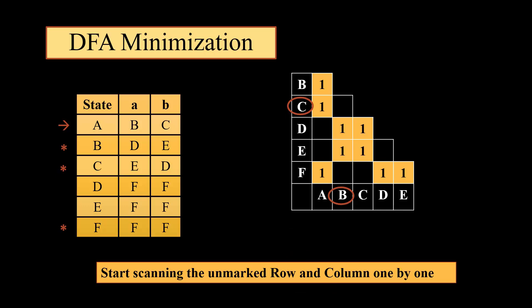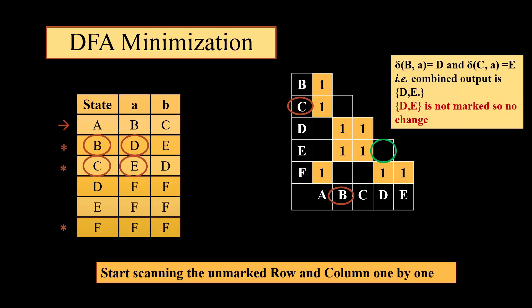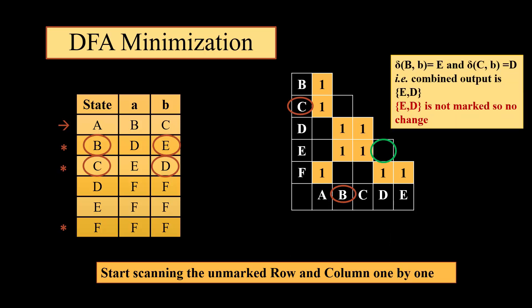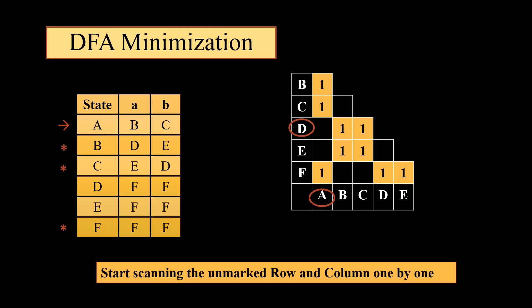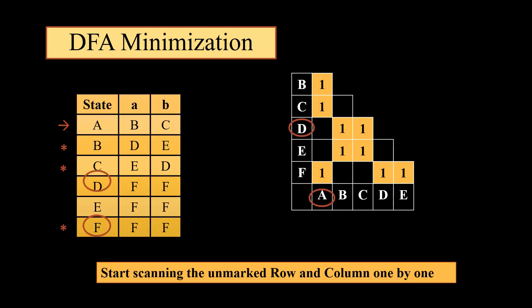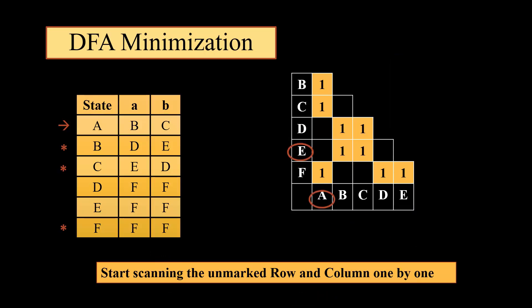We start with BC. BC on A gives us DE. Since DE is unmarked, BC will remain unmarked — no change. BC on B gives us ED; ED is also unmarked, so no change. Next we move to AD. AD on A gives us BF; BF is unmarked, so no change. AD on B gives us CF; CF is unmarked, so AD will not be marked as yet.